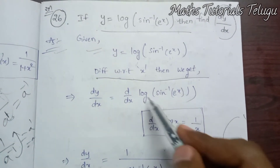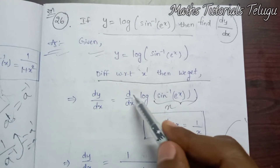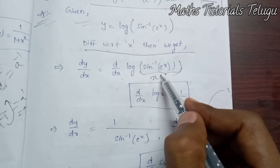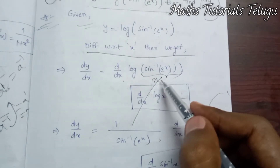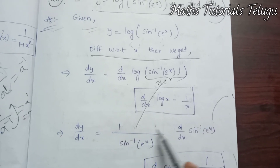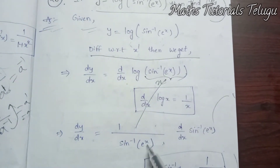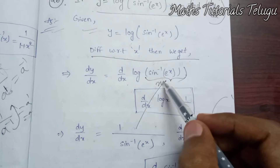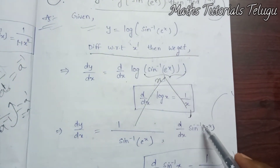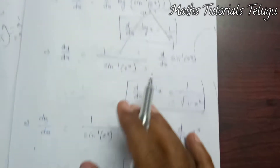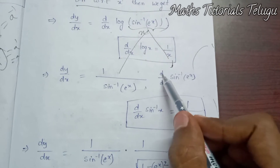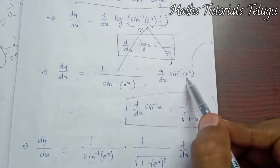For d/dx of log x, we apply 1 by x, and then apply the inner differentiation. So dy by dx is equal to 1 by sine inverse of e power x, multiplied by the inner differentiation — that is d/dx of sine inverse of e power x.